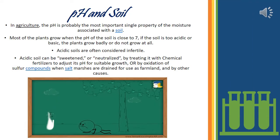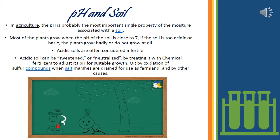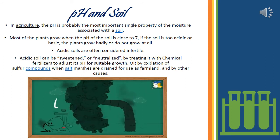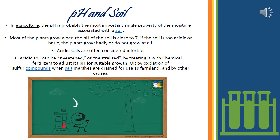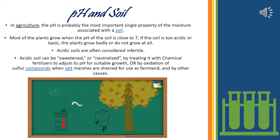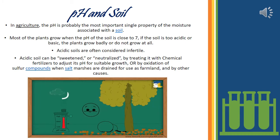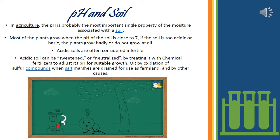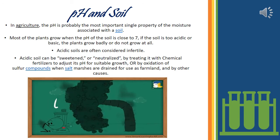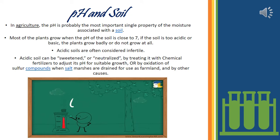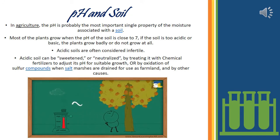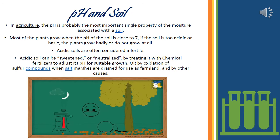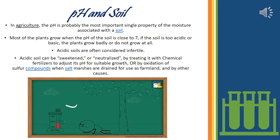pH value either too high or too low is unsuitable for soil for protective plant growth. The pH value is probably the most important single property of moisture associated with soil, since it reveals what crops will grow readily and what adjustments must be made to grow any other crops. Most plants grow when soil pH is close to 7. If the soil is too acidic or basic, plants grow badly or not at all. Acidic soils are often considered infertile and can be neutralized by treating with chemical fertilizers or by other soil management methods.